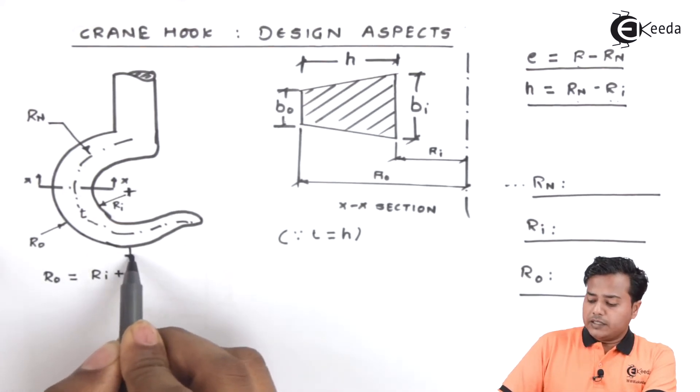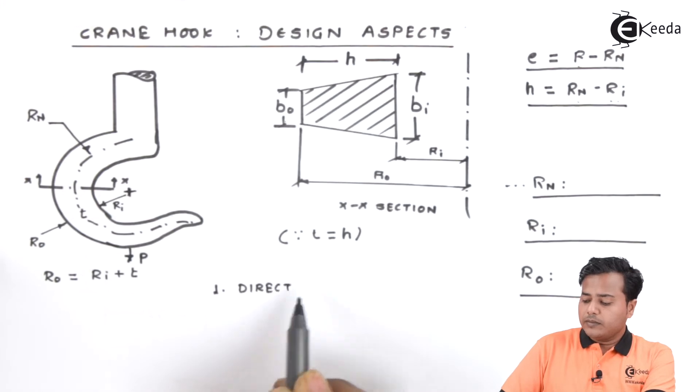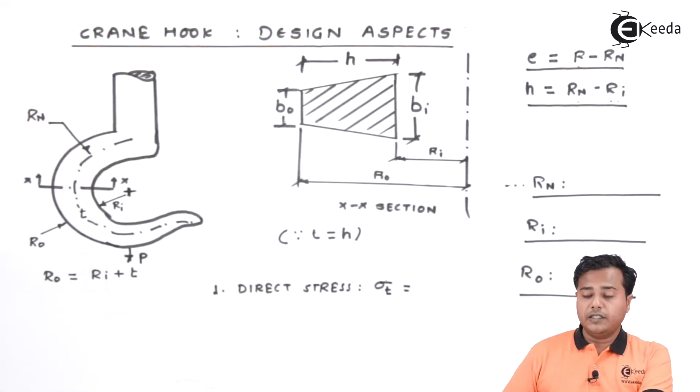If the load is acting like this there are two types of stresses. The first stress will be the direct stress and which is nothing but in this case it is going to be tensile in nature and that is nothing but p divided by area of cross section of this particular.